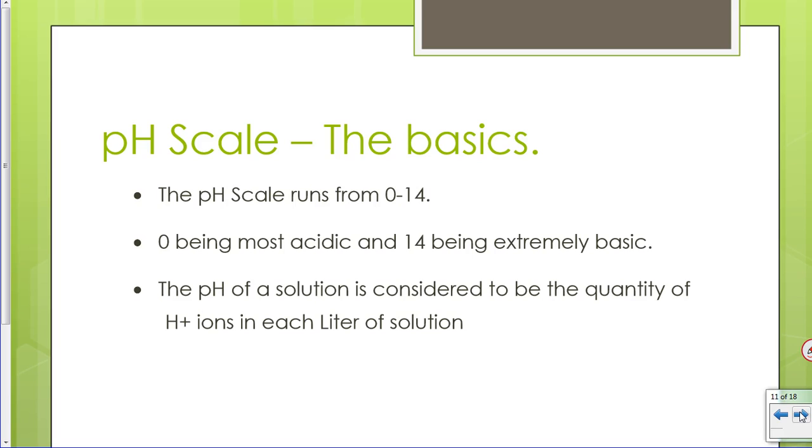The pH scale, the basics. So funny. The pH scale runs from 0 to 14. 0 being the most acidic and 14 being extremely basic. The pH of a solution is considered to be the quantity of H-plus ions in each liter of solution. Or of the OHs for a base.